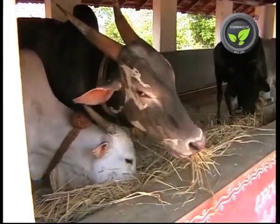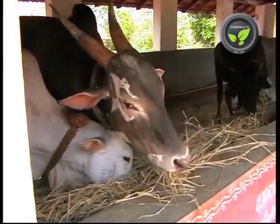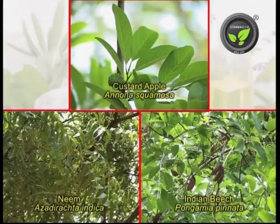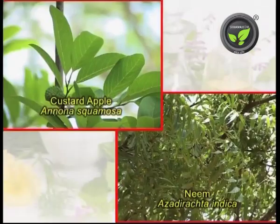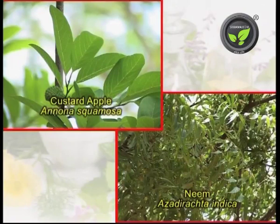6th Medicine. Ingredients: Custard apple, neem, and Indian beech. Method: Crush the custard apple seeds and neem leaves in water. Apply this mixture in the morning and wash the body in the evening. Continue this for 4 to 5 days.